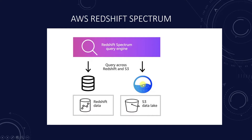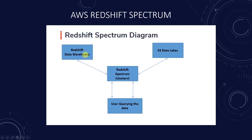We can create Redshift Spectrum tables by defining the structure of our files and registering them as tables in the external data catalog. Redshift Spectrum is part of Amazon Redshift web services that offers a common platform to extract and view data from databases as well as S3 data lakes. We can query data from both services without having to move data between them.